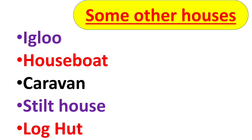There are many other kinds of houses in the world. Let us see some of them. They are igloo, houseboat, caravan, stilt house and log hut. Let us see these houses one by one.